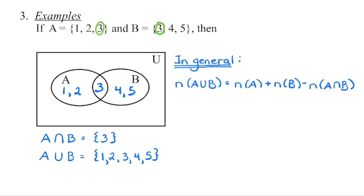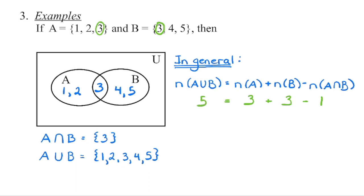In general, the number of elements in A or B equals the number in A plus the number in B, minus the intersection — because we only want to count each element once. So three plus three is six, minus one gives us five, which is the number of elements in A or B.